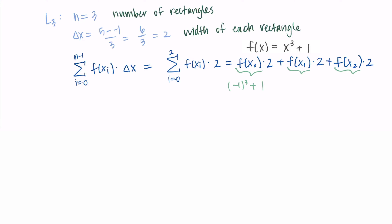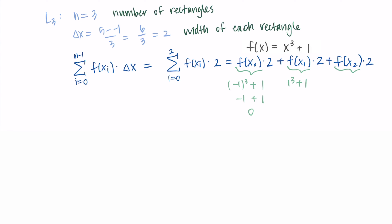For f(x₀): x₀ = -1, so (-1)³ + 1 = -1 + 1 = 0. For f(x₁): x₁ = 1, so 1³ + 1 = 1 + 1 = 2. For f(x₂): x₂ = 3, so 3³ + 1 = 27 + 1 = 28.